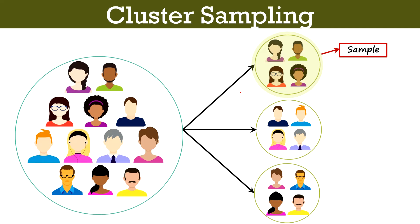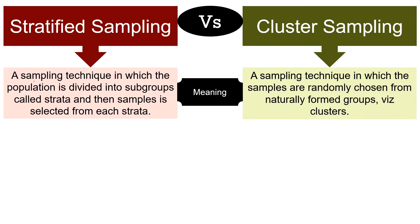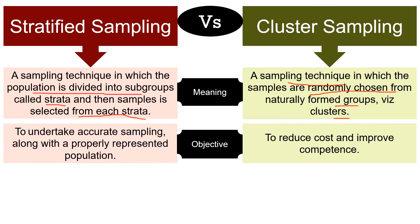After that we collect data from the selected sample. Moving on to the differences: Stratified sampling is a technique in which the population is divided into subgroups called strata and samples are selected from each stratum, whereas cluster sampling is a technique in which samples are randomly chosen from naturally formed groups called clusters. Stratified sampling aims at accurate sampling with properly represented population, whereas cluster sampling aims at reducing cost and improving efficiency.